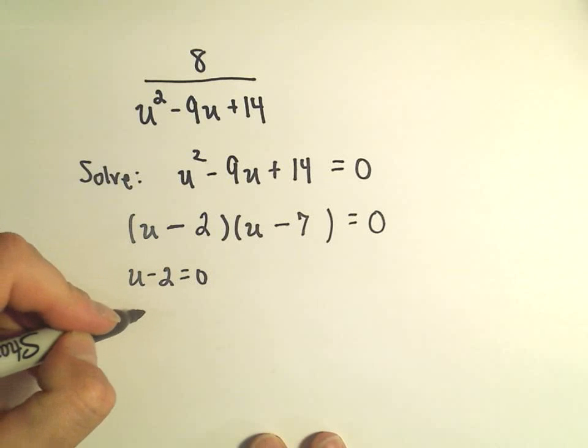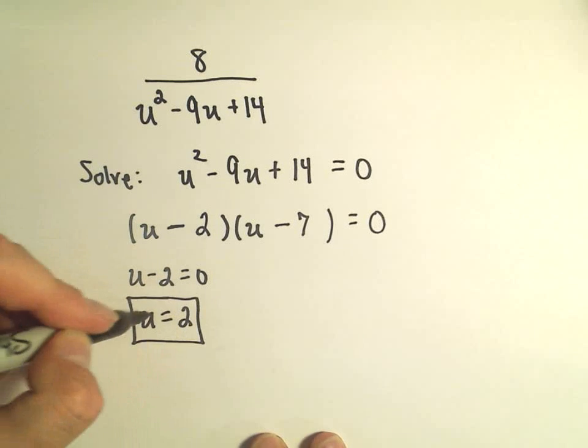we'll get u minus 2 equal to 0. If we add 2 to each side, we'll get u equals 2.